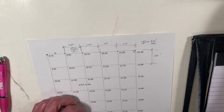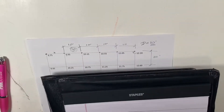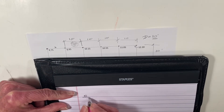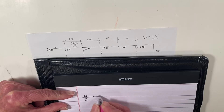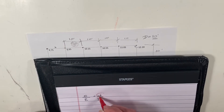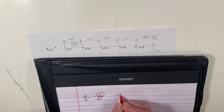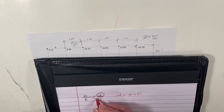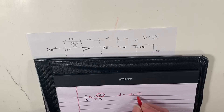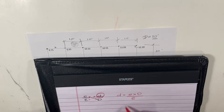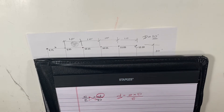Before we go further, let's use the interpolation equation: little e over big e equals little d over big d. What we're typically trying to do is solve for little d. If we're solving for little d, we can reduce this equation to: little d equals little e times big d divided by big e - because we cross-multiply to get big e on one side and little d on the other.